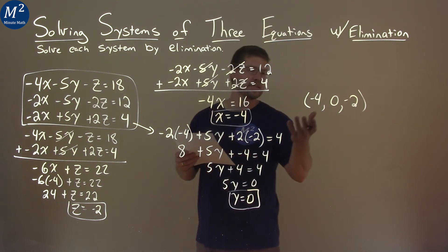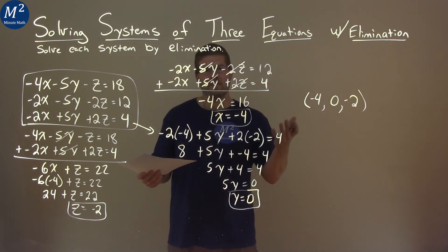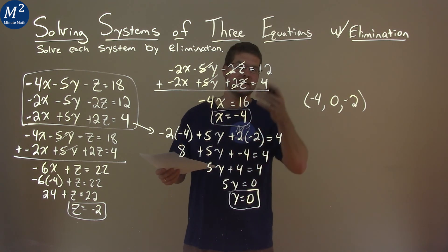So we can write this as one statement of negative 4, 0, negative 2, to represent the values for x, y, and z, and that is your final answer.